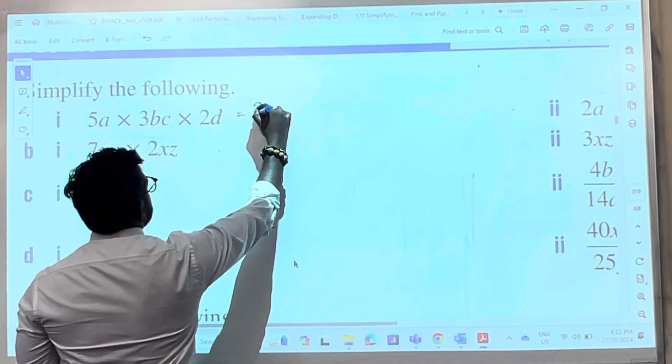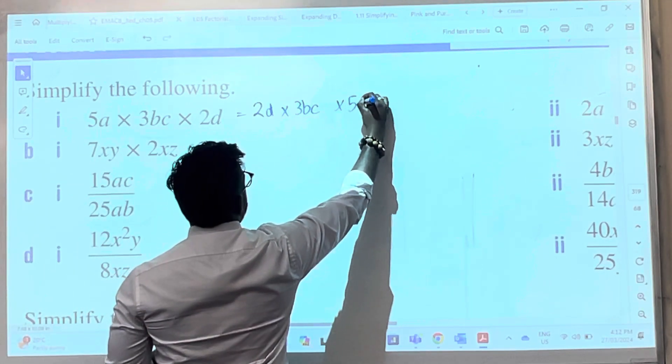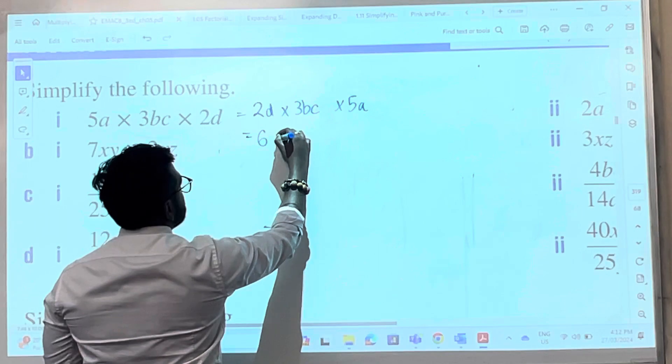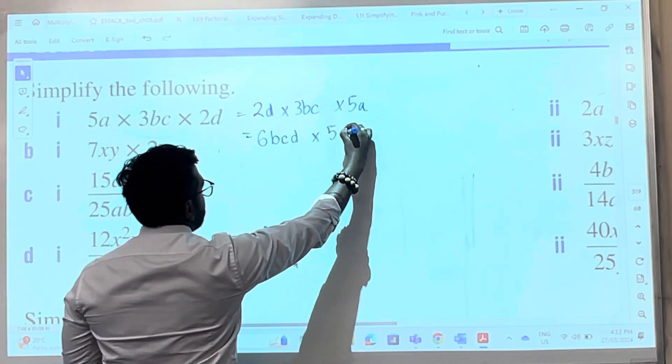So 2d times 3bc times 5a, which is 6bcd times 5a.